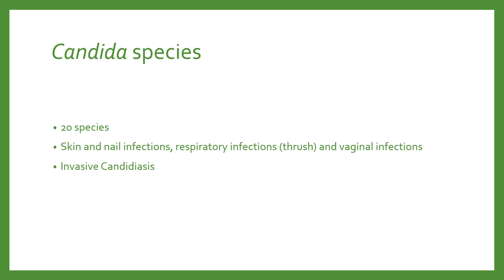In most clinical specimens, Candida albicans is the yeast isolated. However, the other 50% of the time you may be dealing with a different Candida species — there are actually 20 species of Candida, including Candida tropicalis, Candida parapsilosis, and Candida glabrata. Candida species can cause skin and nail infections, respiratory infections including thrush seen in immunosuppressed and HIV patients, genital or vaginal infections due to pH change of the vagina, and invasive candidiasis, which means Candida taking over a certain body tissue.